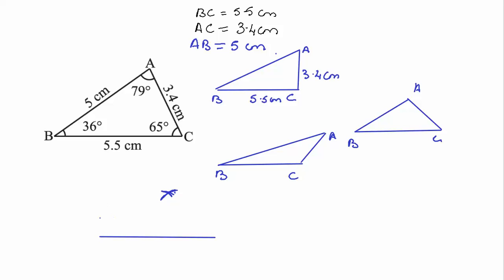On B, draw an arc for AB, and then put a pointer on C and draw an arc for AC of measurement 3.4. Then try to join both of them. So once you join this point, then you join this point.